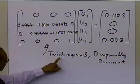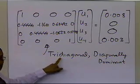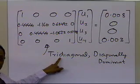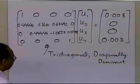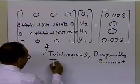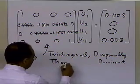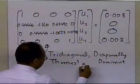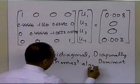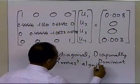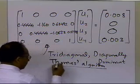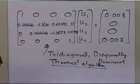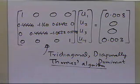The coefficient matrix is diagonally dominant. One implication is that if you use an iterative method such as the Gauss-Seidel method to solve these equations, convergence is guaranteed. The implication of the tridiagonal structure is that you can use Thomas's algorithm to quickly solve this set of equations.